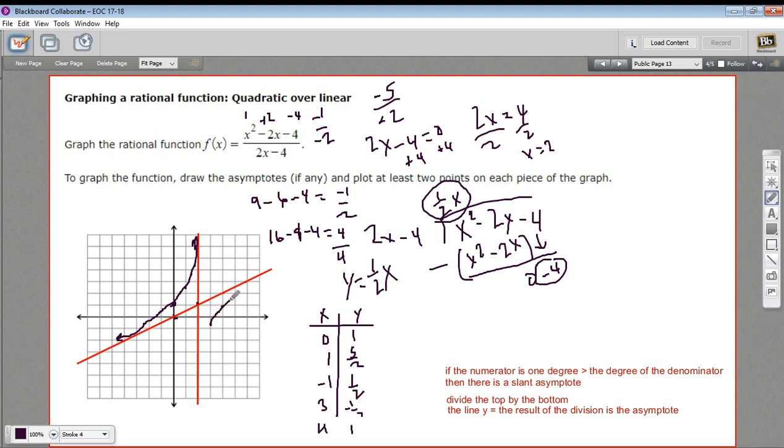And you can basically see how the shape of this is going to go as well. So that is how to graph a rational function when you've got a quadratic over a linear.